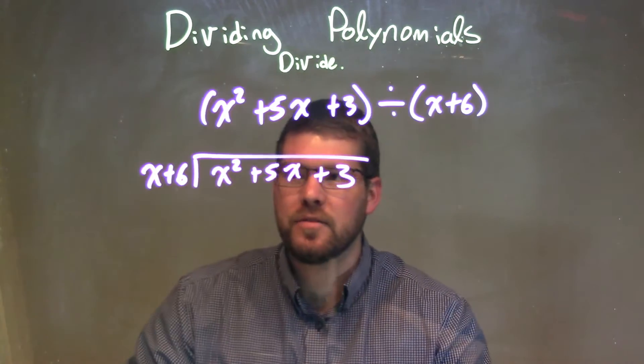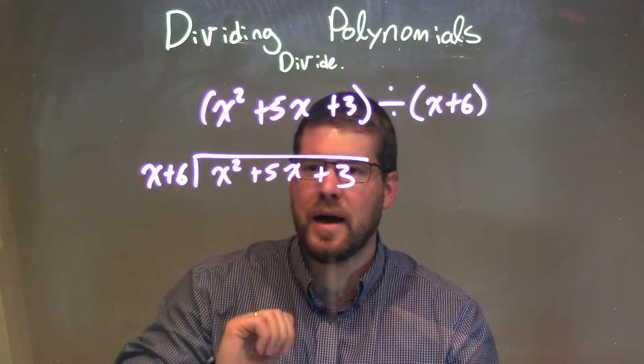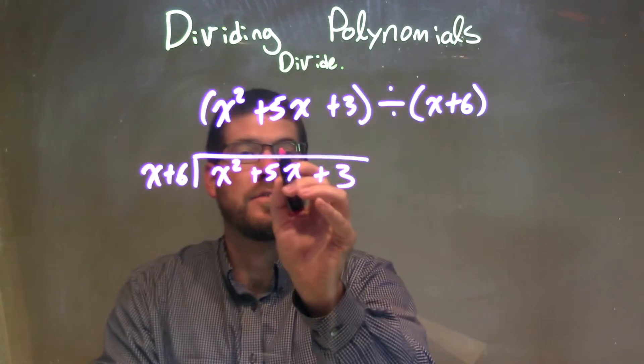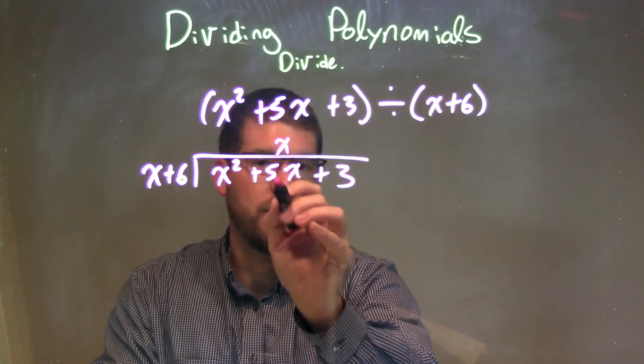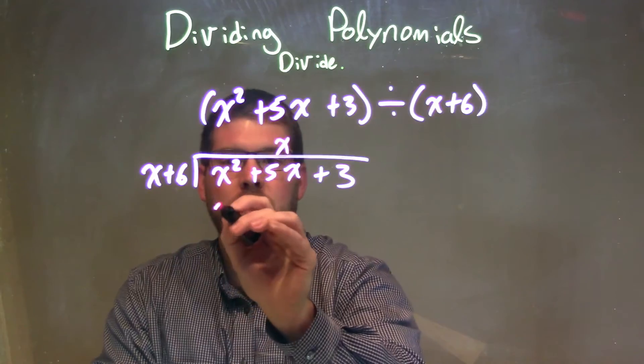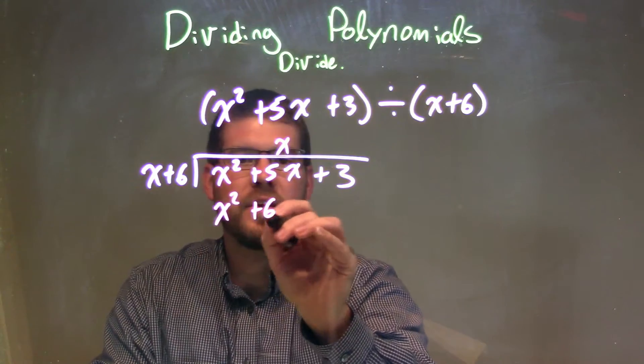So now I'm going to ask myself here, what times x gives me x squared? Pretty simple, that's just x. The x right there above the 5x. x times x is x squared. Great. And x times 6 is 6x.